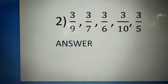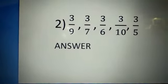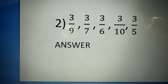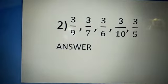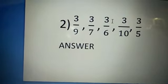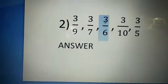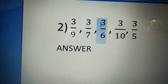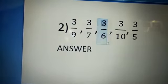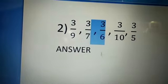Our second problem is 3 by 9, 3 by 7, 3 by 6, 3 by 10, and 3 by 5. Here, you see the numerator — all are 3. So every numerator is the same but the denominator is different.